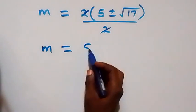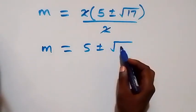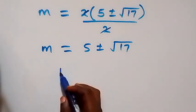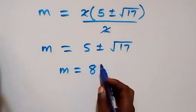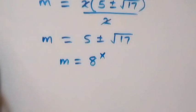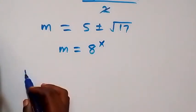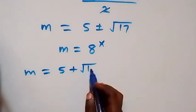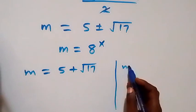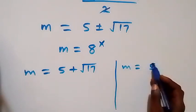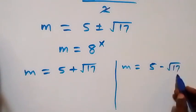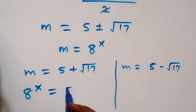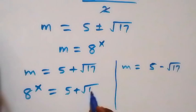The 2s cancel, giving m equals 5 plus or minus root 17. Recalling that we let m equal 8 raised to power x, we have two values of m: m equals 5 plus root 17, or m equals 5 minus root 17.